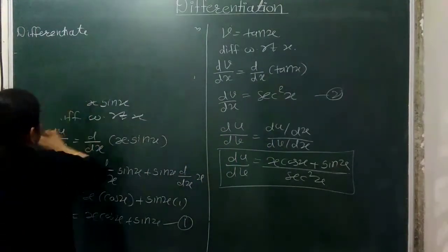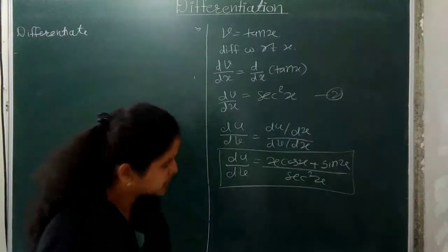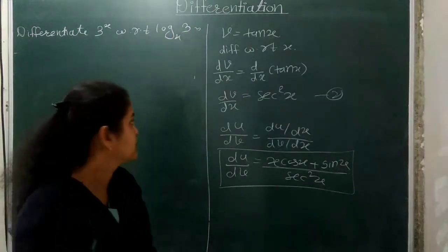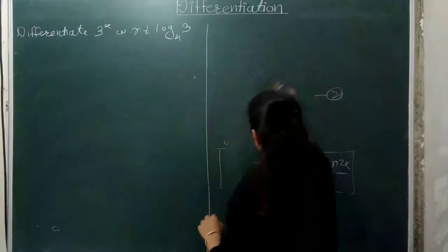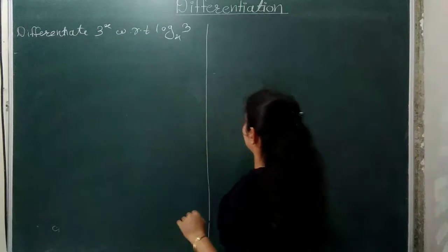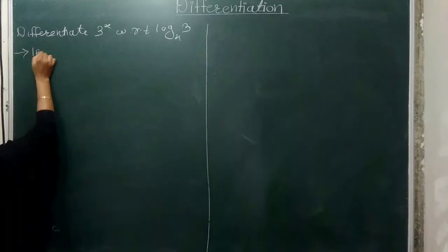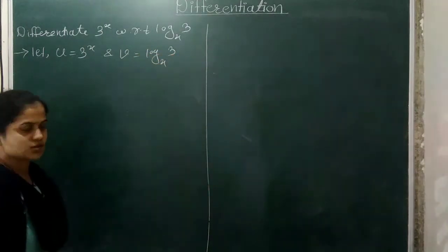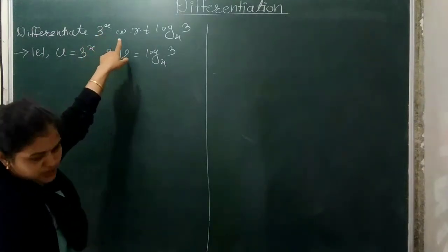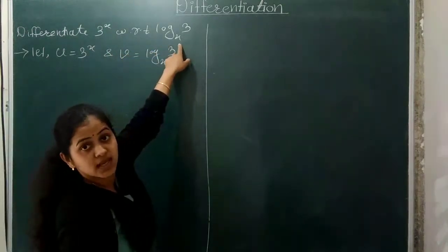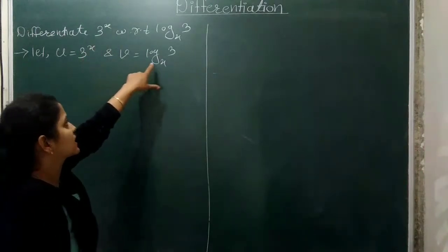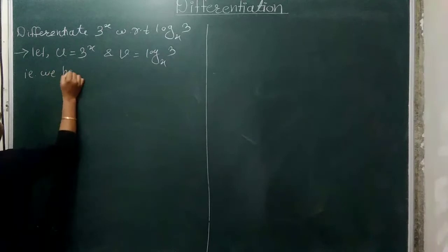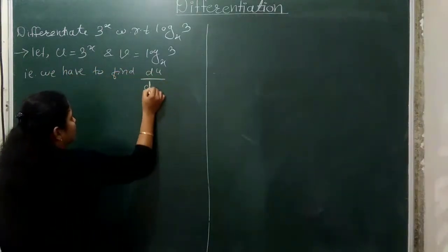Next example: differentiate 3 raised to x with respect to log 3 to the base x. Let u equal 3 raised to x and v equal log base x of 3. We need to find du/dv, so we differentiate u and v separately with respect to x.